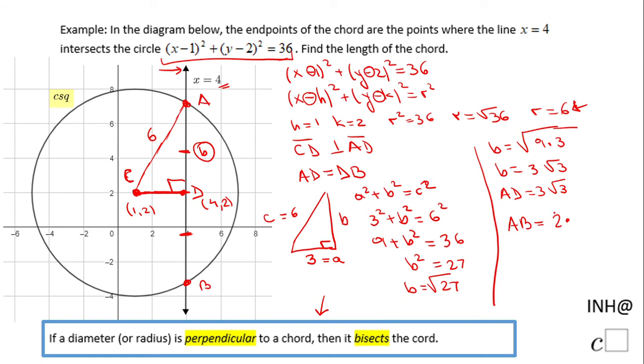To find AB, we'll double AD because point D is in the middle—CD bisects AB. So 2 times AD gives us 2 × 3√3 = 6√3. That's how long the chord is.